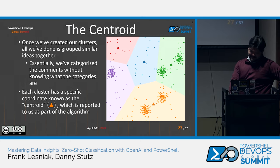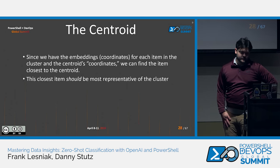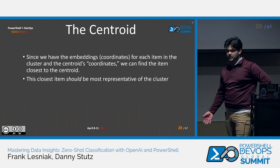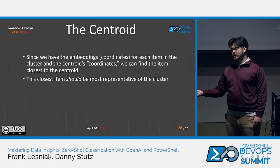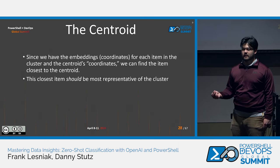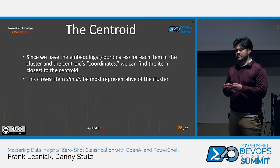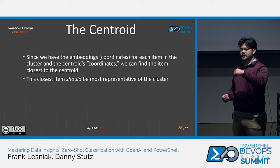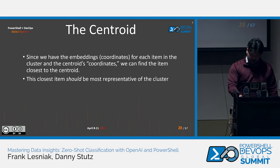Moving along to talk more about the centroid: once we basically have the coordinates of the centroid, there should be an item that is closest to that centroid. We call that the most representative item of that cluster or topic. In theory, this closest item should be the most representative — it should have the idea around the category solidified and be most related to that. The advantage of using the top five most representative items instead of just one is you remove some potential bias inherent in a single comment.